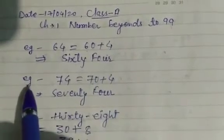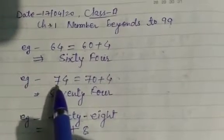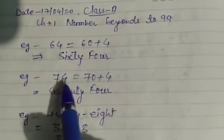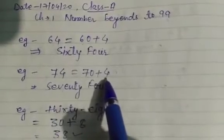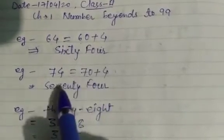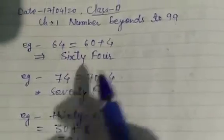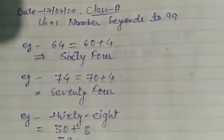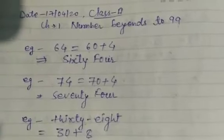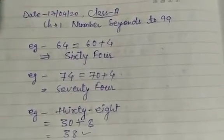I am taking the next example to better understand. I am taking 74, where 74 is written as 70 plus 4. Then 70 is 'seventy' and 4 is 'four'. This was the example of how we can write the number in words.